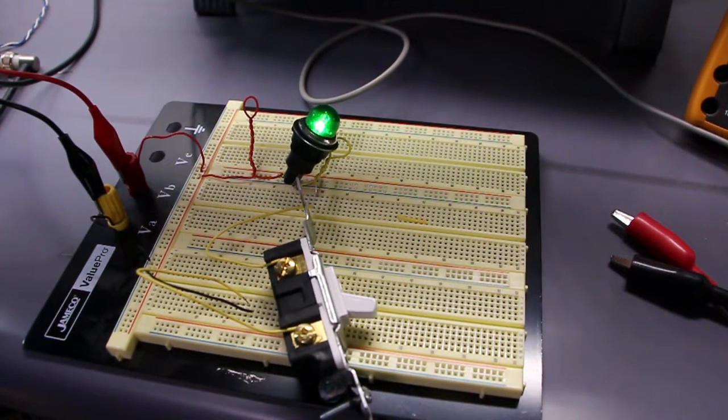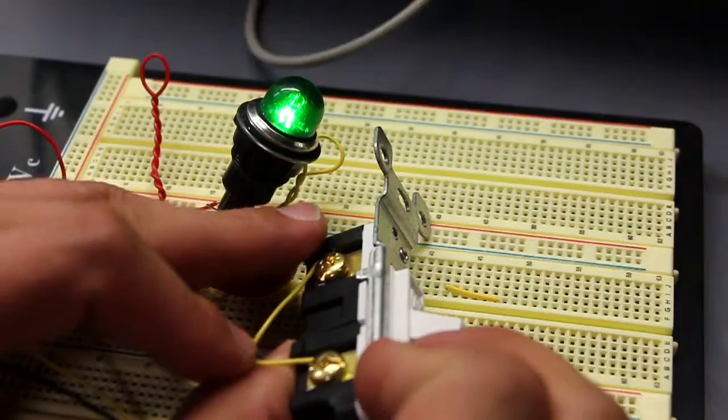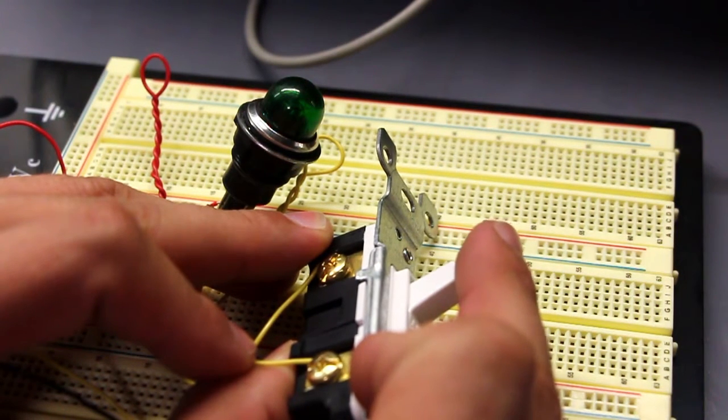Bouncing is basically the tendency of two metal contacts, such as in this light switch that I have here, to generate multiple signals as it's being turned off and turned on.